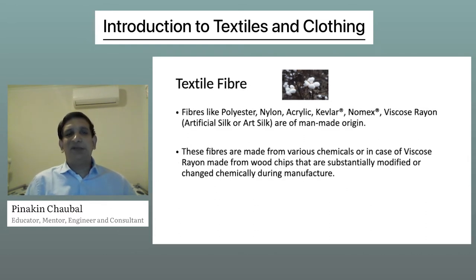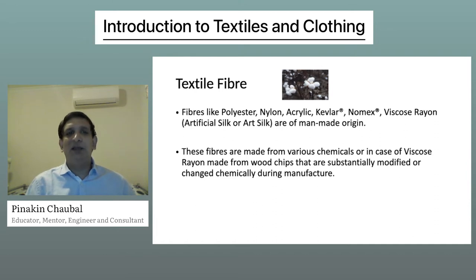Fibers like polyester, nylon, acrylic, Kevlar, Nomex, and viscose rayon or artificial silk are of man-made origin. These fibers are made from various chemicals, or in the case of viscose rayon, made from wood chips that are substantially modified or changed chemically during manufacture.